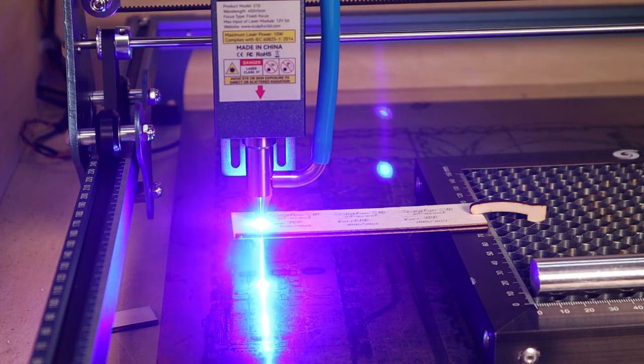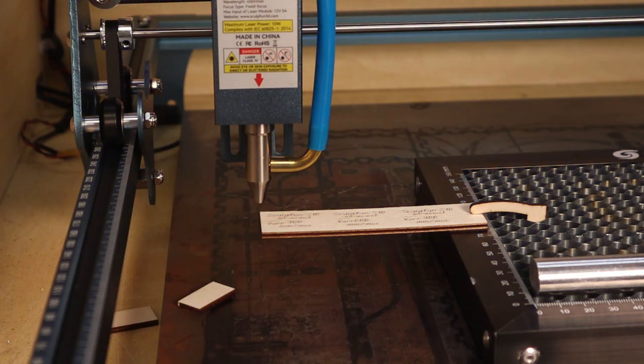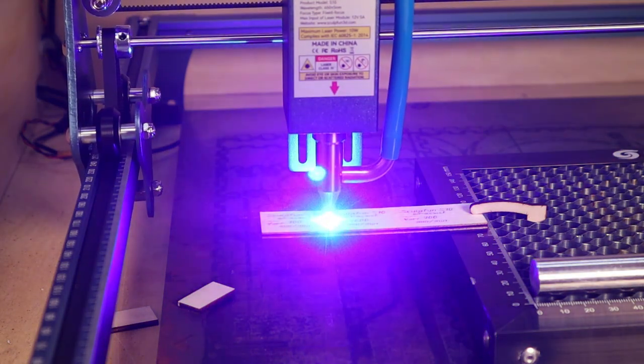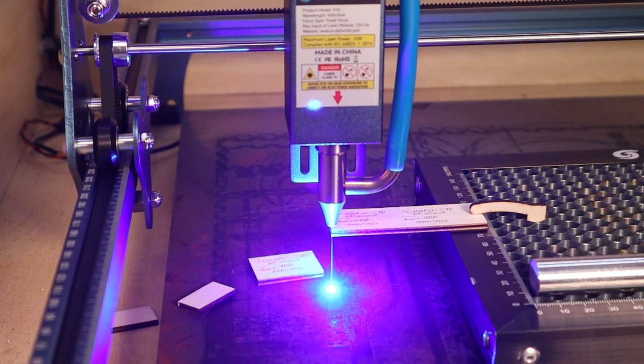And now let's see how the SculptFun S10 performs at cutting 3mm, 6mm and 10mm poplar plywood boards. I will perform all the tests with and without air assist to see how the air assist affects the cutting performance.